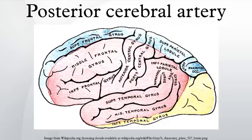Only about 19% of adults retain PCOMMA dominance of the PCA, with 72% having a dominant basilar origin, and the rest having either equal prominence between PCOMMA and basilar artery, or a single exclusive source.